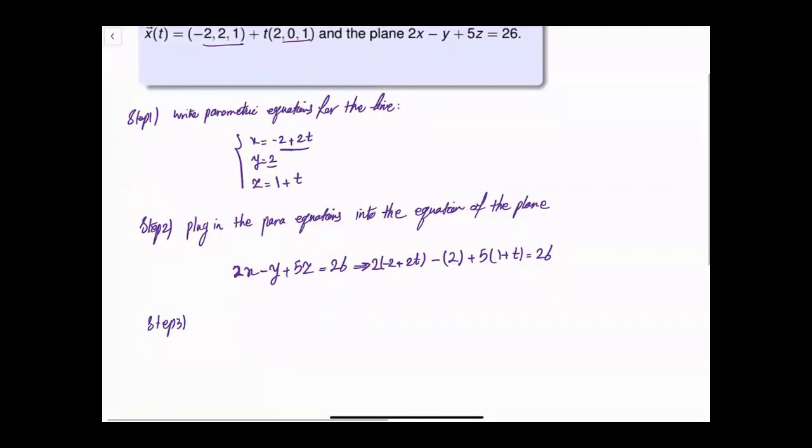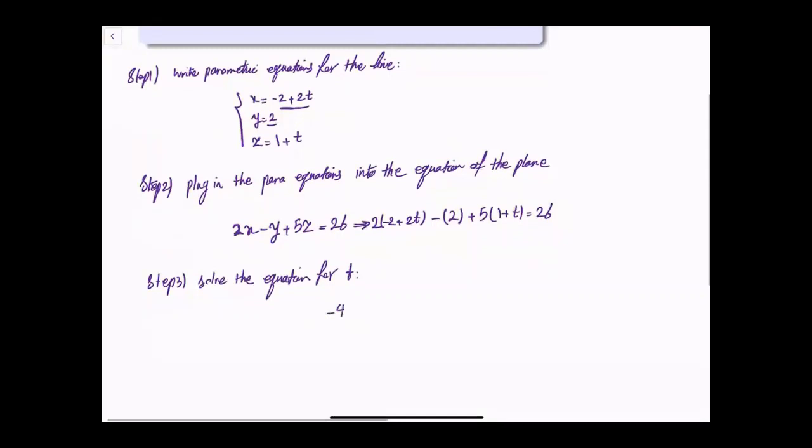Step 3 is solve the equation for t. This means that we have -4 + 4t - 2 + 5 + 5t = 26.